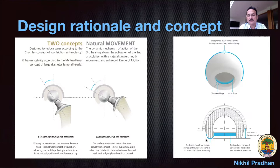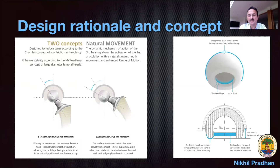To decrease the risk of dislocation, the poly overhangs by 11 millimeters to the outer shell, increasing the jump distance and thus reducing the risk of dislocation. The poly is now a highly cross-linked poly, and the edge of the poly is chamfered so that when the neck articulates with it, you don't get edge loading. The head is captive within the polyethylene shell and hence does not dislocate, and the large-on-large articulation follows the McKee-Farrar principle.